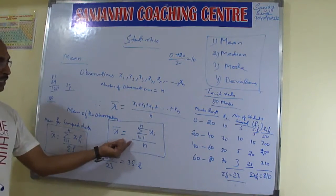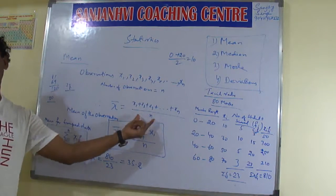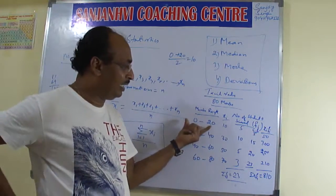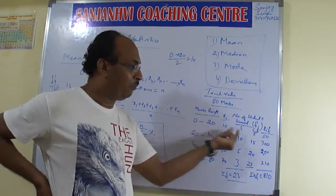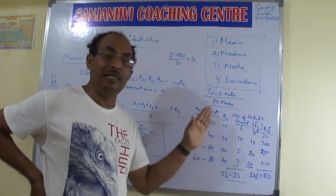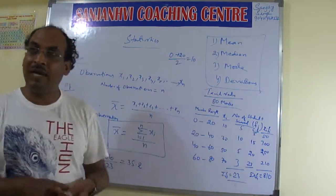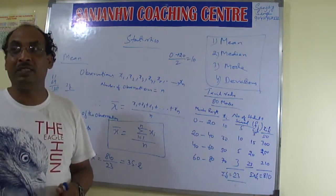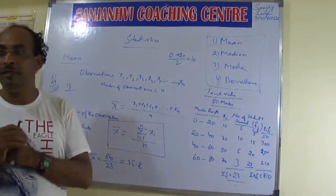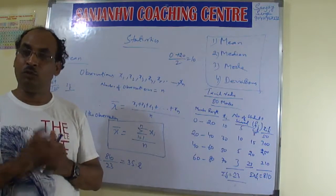Got this? Directly we will add, and whatever number of observations are there we can find the mean. But in this grouped data, 0 to 20 — 5 students scored. The difference is that in direct data the number was there directly, but in grouped data you are finding frequency — how many persons scored between each range. So you understood now.